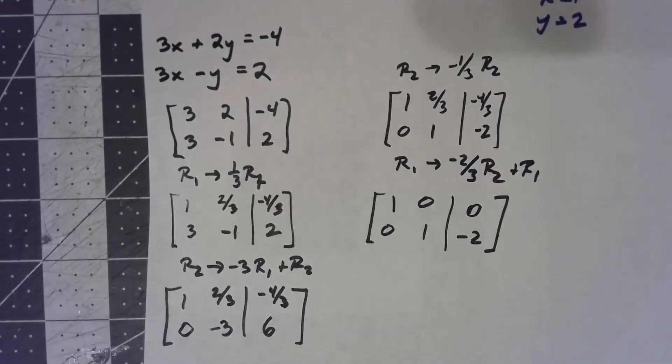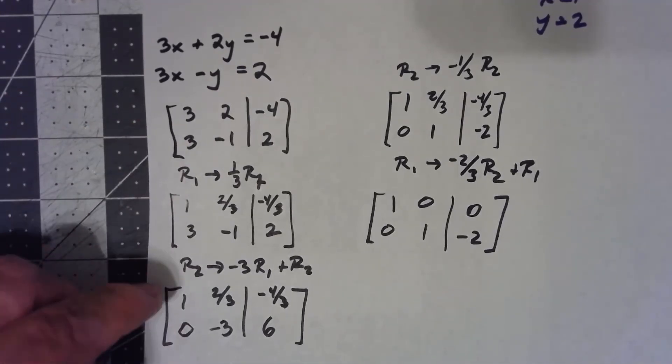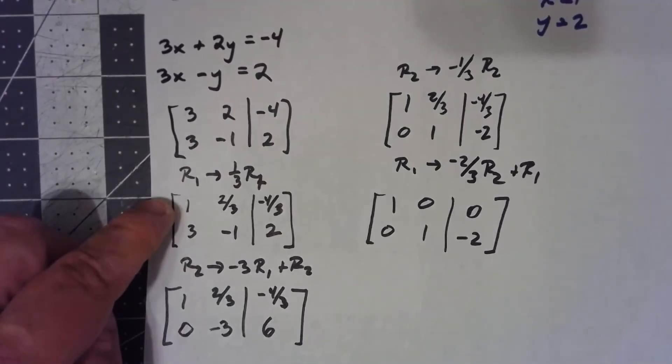So notice that even though we had fraction math along the way that we had to do, we did get whole number answers in the end. And that can certainly happen. It can also happen that you get fraction answers. It all depends. But the point is this multiplying by the reciprocal will always work to get a 1 there, but it does make the intermediate steps after that harder because you've got to deal with the fractions.